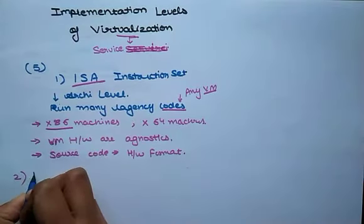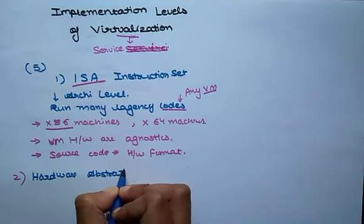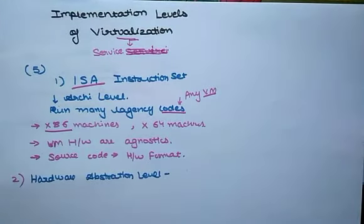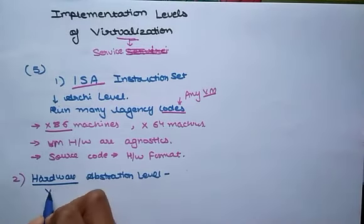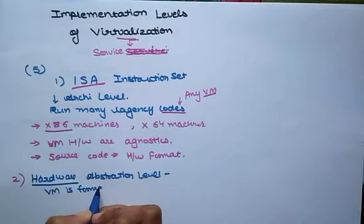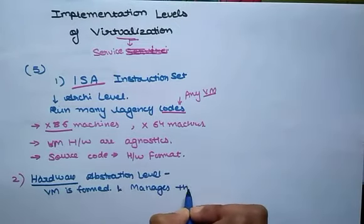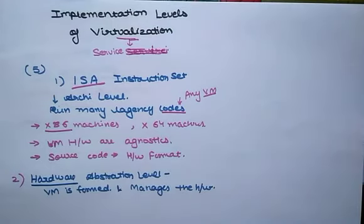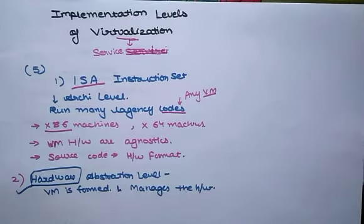The second level is Hardware Abstraction Level. True to its name, Hardware Abstraction Level lets the virtualization platform work at the level of the hardware. This makes use of a hypervisor which is used for functioning at this level. The virtual machine is formed and manages the hardware using the process of virtualization.